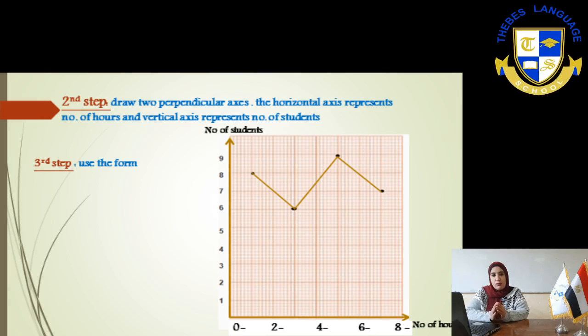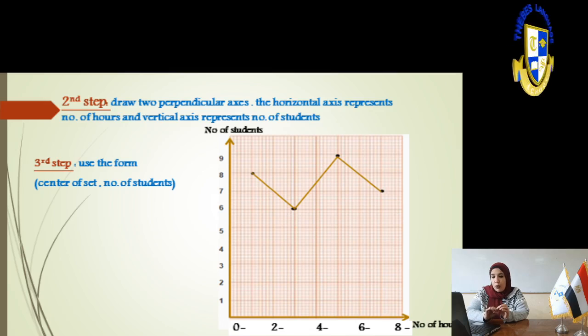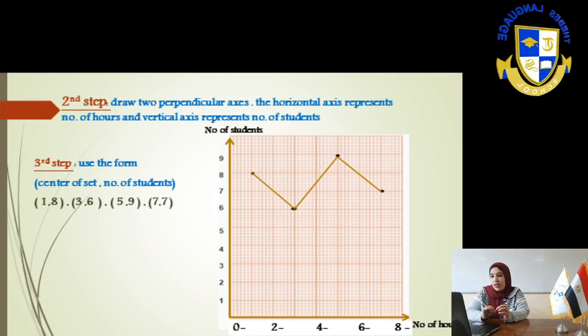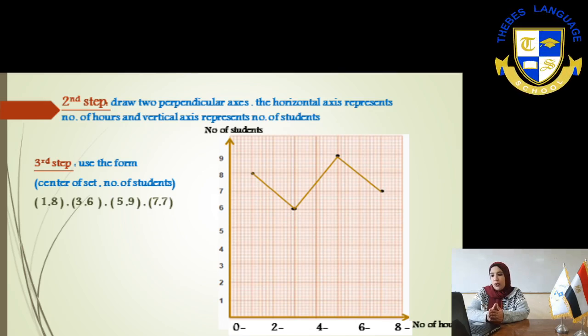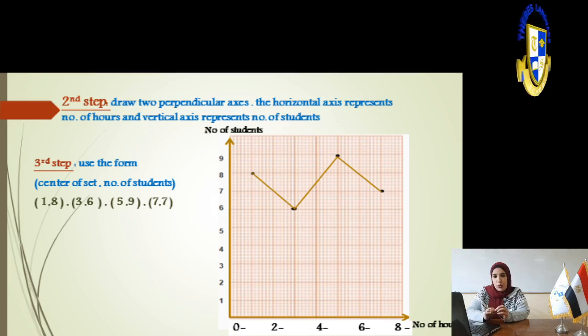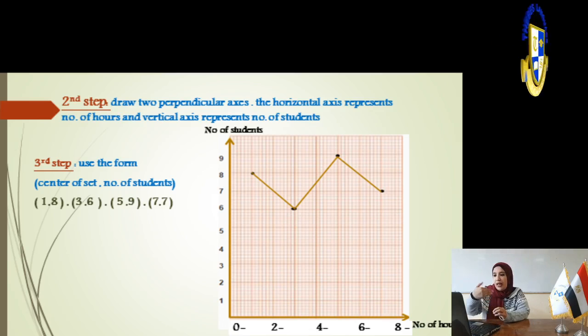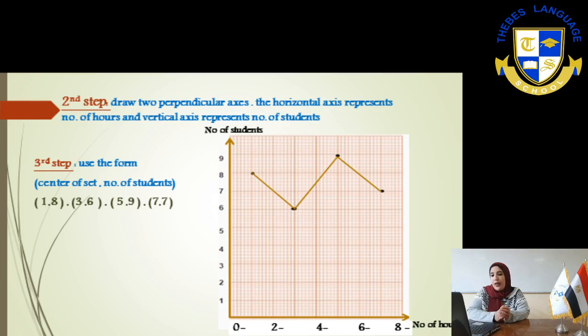Here you will put the point from 0 to 2 in the middle, from number 1 till we reach 8. 8 is the number of people who studied the hour from 0 to 2. We will put it from the center, like we do in coordinate plane, 1 and 8. From point 1 in x-axis till we reach 8 in the y-axis.